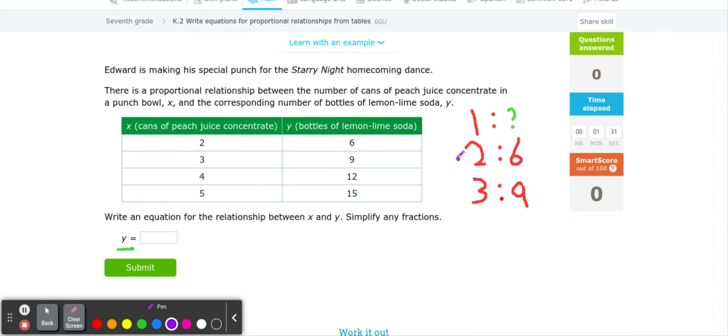Since these numbers aren't that hard, an easy way to do it is we have to find the relationship between these two numbers first. To get 2 to 1, you have to do 2 divided by 2. So we basically need to do divided by 2.